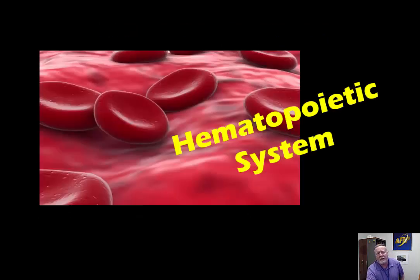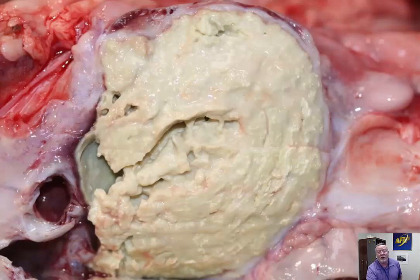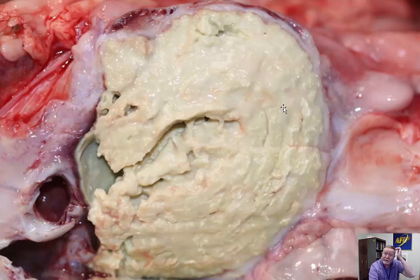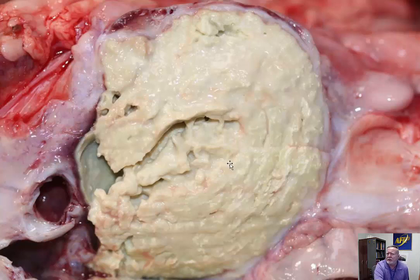Let's start with the hematolymphatic system and we're primarily going to focus on the lymph nodes. The first disease we need to talk about affects both sheep and goats and is known as caseous lymphadenitis. The name tells you a lot — lymphadenitis indicates it affects primarily the lymph nodes, but we'll see that it can go systemic as well. Caseous describes the appearance of these lymph nodes, caseous meaning cheesy.